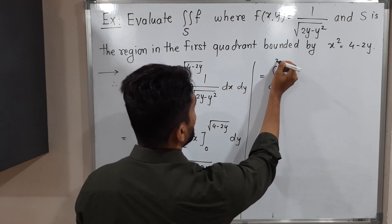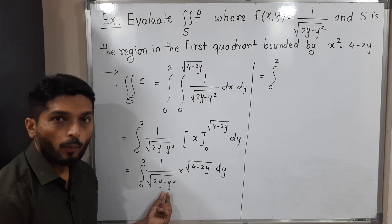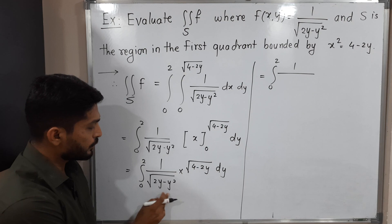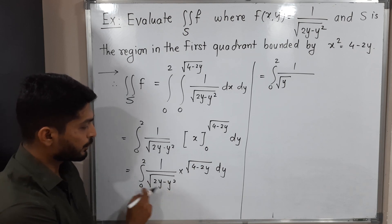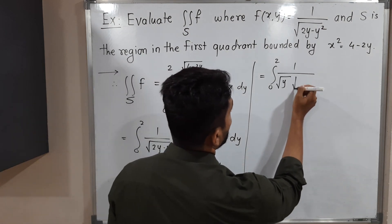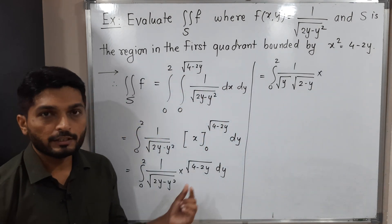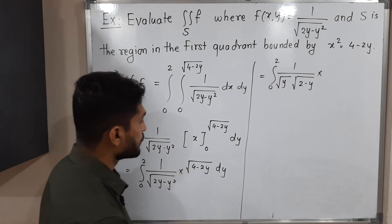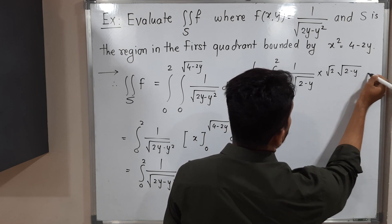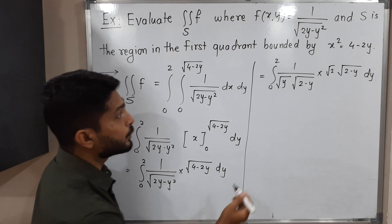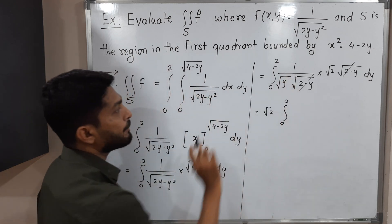This integral looks difficult but it is not. In the denominator, y appears at both places, so let us take y common. When y comes outside the square root it carries the root, so √y comes outside, leaving √(2 − y) inside. We can also take 2 common from the numerator, giving √2 · √(2 − y). The √(2 − y) terms cancel. The constant √2 comes outside, leaving ∫₀² 1/√y dy = √2 ∫₀² y^(−1/2) dy.